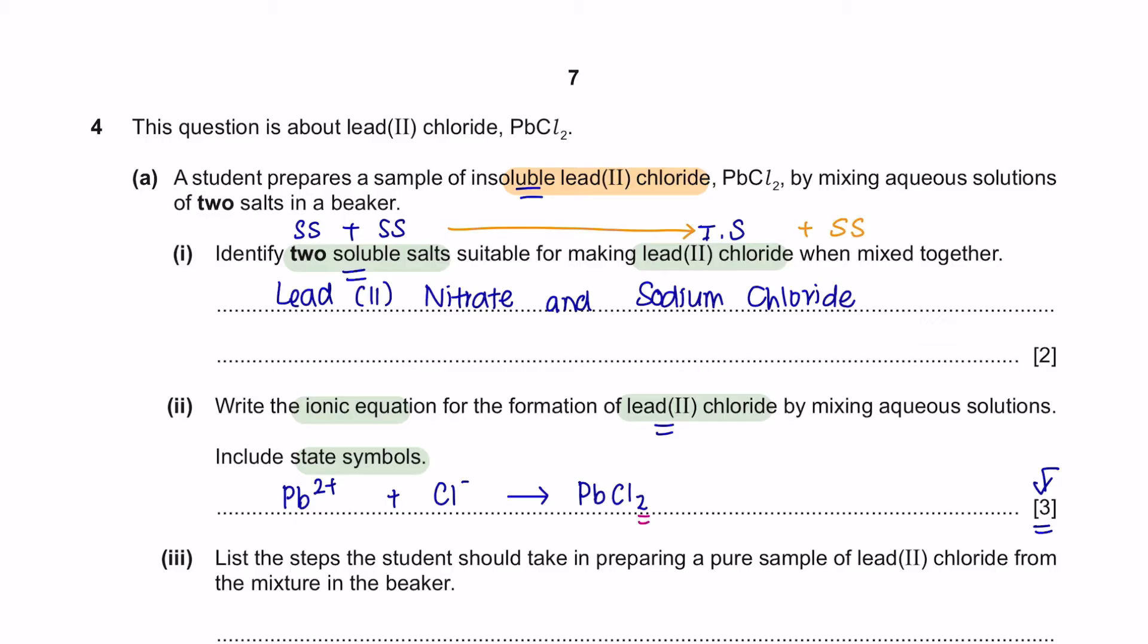Next, there are two chlorines here so we're going to have to balance it by putting two over here. That will give you your second mark. Next, you've got to state the symbols. Ions are always present in aqueous state, and since this is an insoluble salt, this is solid. That's how you get a complete three marks.